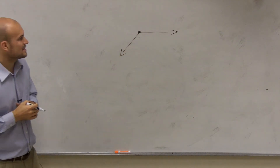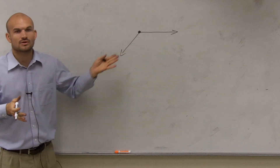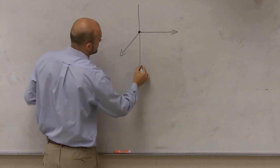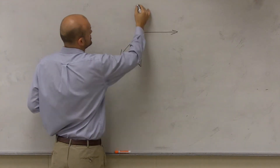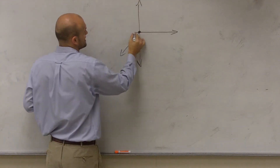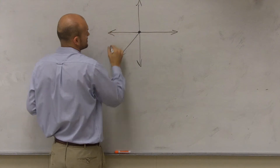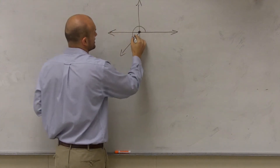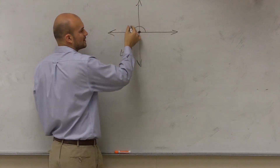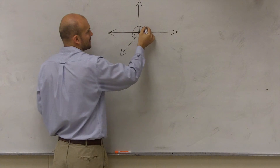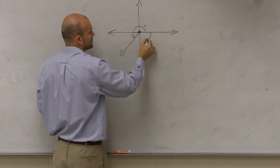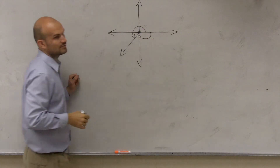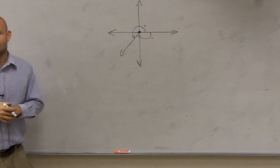Then the next thing we talked about is putting an angle on an x and y-axis. So it's still going to have the same properties, but now the angle is on an x and y-axis, where when it goes counterclockwise it's positive, or clockwise it was what we called the negative angle.